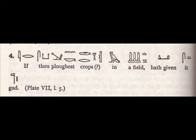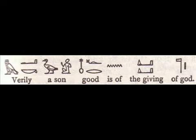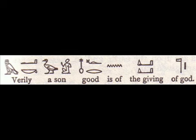Page 102 of the Per-Emeru has a translation where underneath the sign D37 it says 'Hath given' — so once again, give, to give. Moving to page 103, there it says 'Verily, a son, good is of the giving of God.' So we have the sign D37 meaning 'the giving' there — once again, to give, nothing to do with Allah whatsoever. It would not mean 'Verily, a son, good is of Allah' — because we have the letter sign there, that wouldn't make sense.